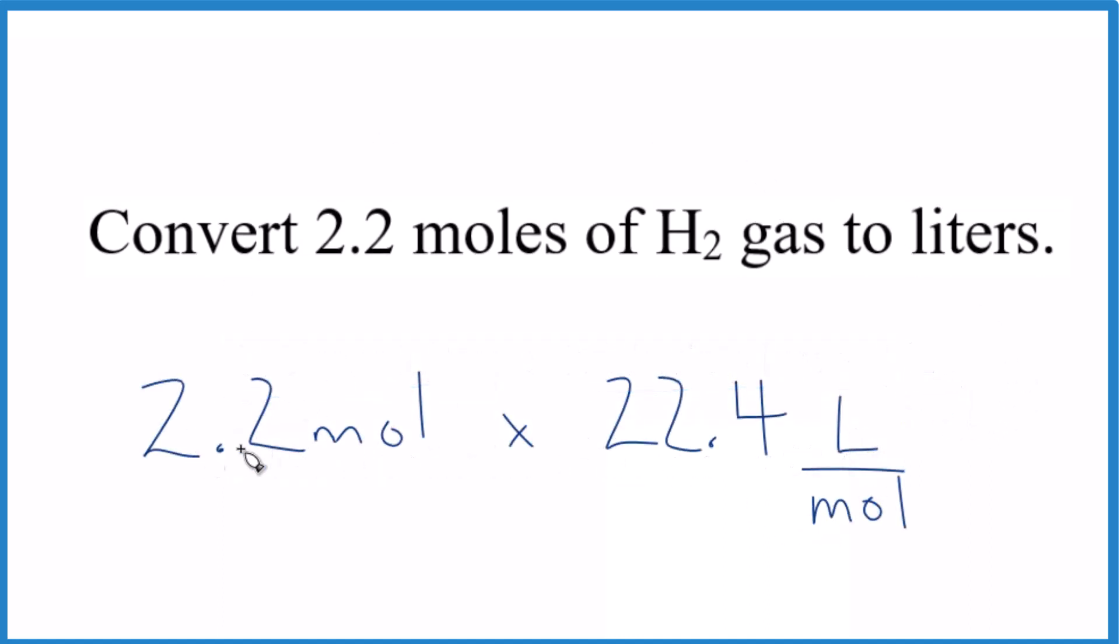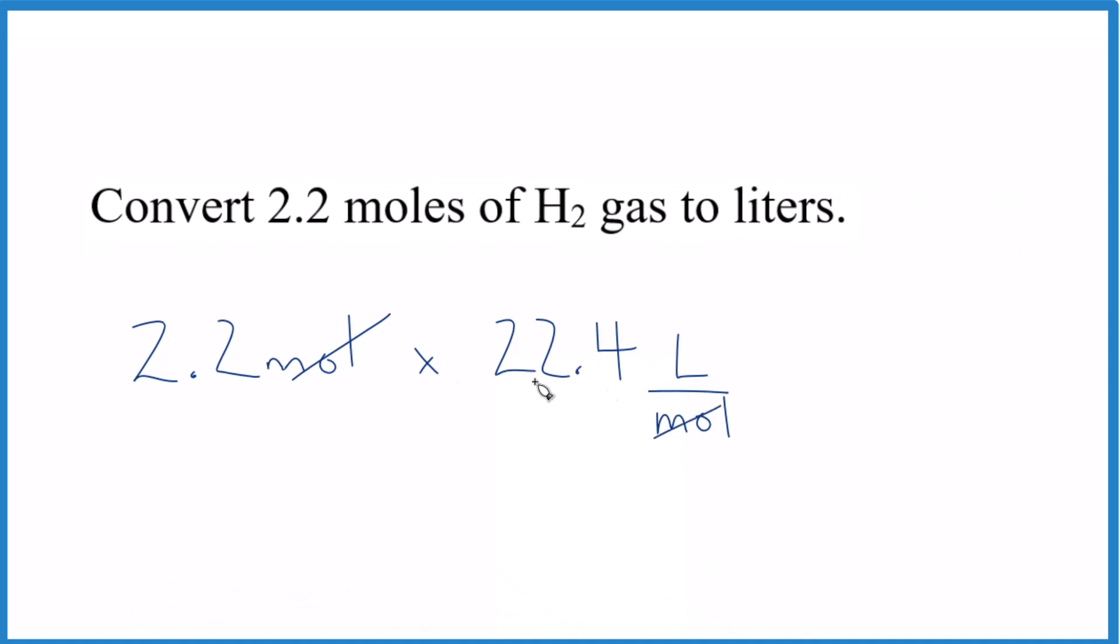So we have our 2.2 moles from the problem. We multiply by 22.4 liters per mole, and we have moles on the top and the bottom. So we multiply, they cancel out. That gives us 49.3, and the units, they're going to be liters. That's all that's left.